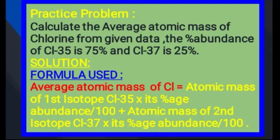Formula میں put کریں گے: تمام isotopes کو ان کے atomic weight کے ساتھ multiply کریں گے ان کے percent abundance سے — یعنی nature میں وہ کتنے percent پائے جاتے ہیں — یہ scientists کی research سے ملتے ہیں۔ Atomic mass of first isotope chlorine-35، پھر اس کی percent abundance divided by 100، plus atomic mass of second isotope chlorine-37، اس کی percent abundance divided by 100۔